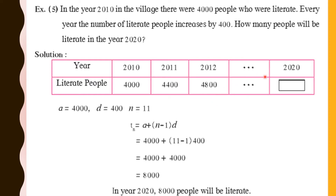So from 2010 going up to 2020, you need to find how many people will be literate — that is your t_n, the last term value. We know the formula of t_n: t_n = a + (n − 1) × d. Here a means your first term, d means your common difference, and n is your number of terms.